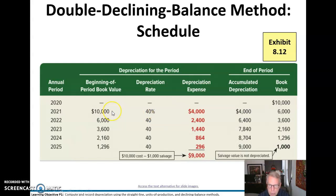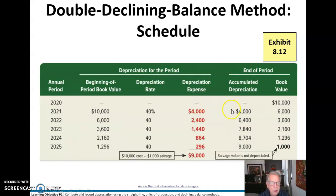Notice too that we start with $10,000 here, not $9,000 which is the depreciable cost. We're starting with the full amount of $10,000. We multiply that times 40 percent and we get $4,000. That's how much depreciation expense we record in the first year. Accumulated depreciation ratchets up to $4,000, subtracted from $10,000 gives us a $6,000 book value.